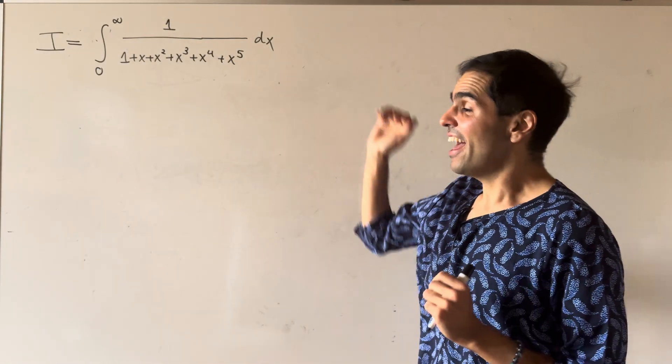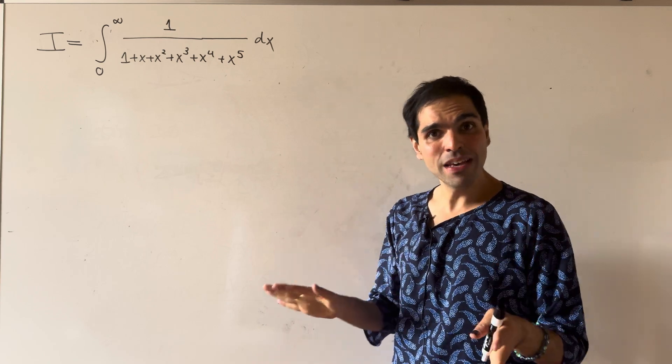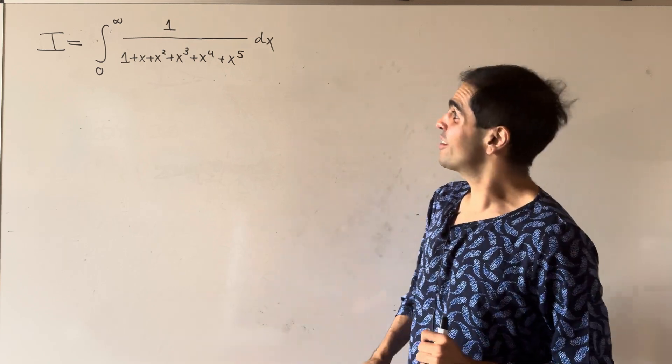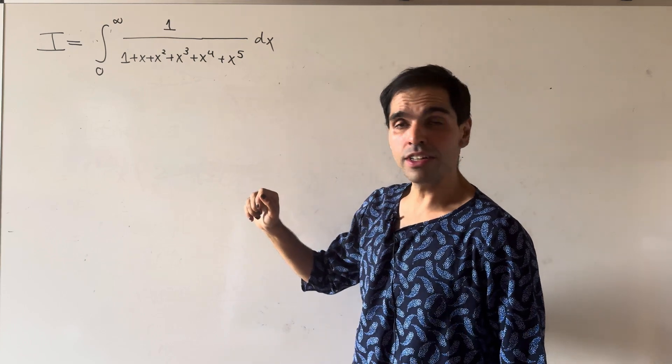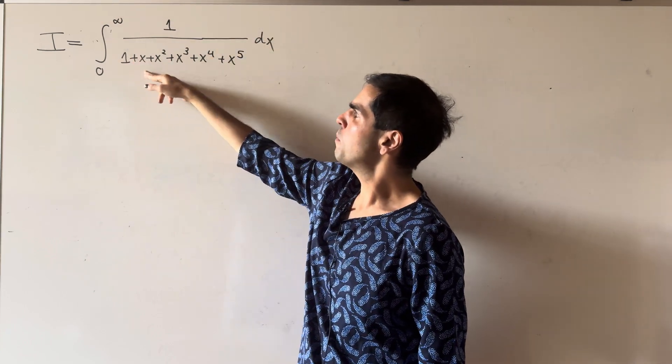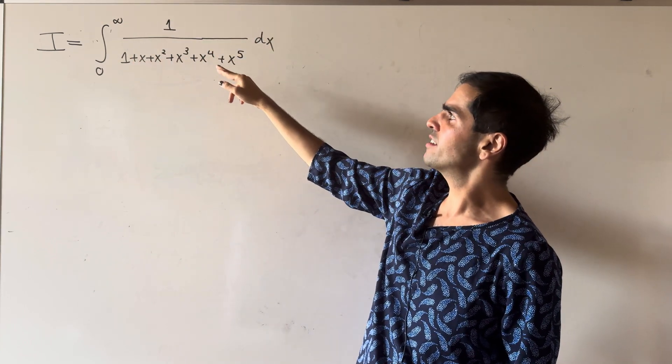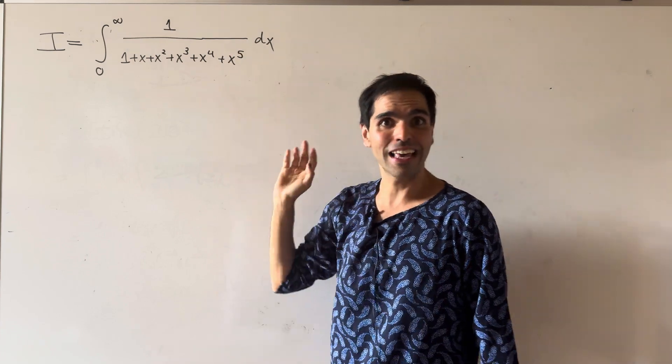All right, thanks for watching. Today we will evaluate an amazing integral with an incredible trick. Let's evaluate the integral from 0 to infinity of 1 over 1 plus x plus x squared plus x cubed plus x to the 4th plus x to the 5th.